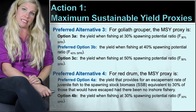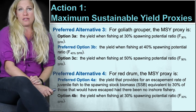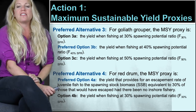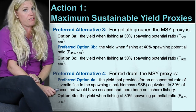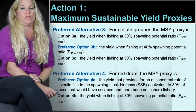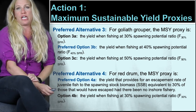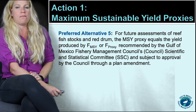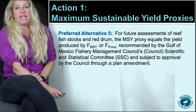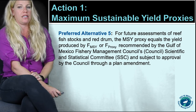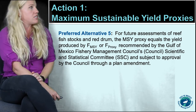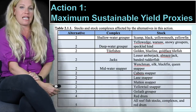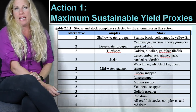The council also selected alternative four as one of its preferreds, which would set an MSY proxy for red drum specifically. Sub-option A would use the yield that provides for an escapement rate of juvenile fish to the spawning stock biomass equivalent to 30% of those that would have escaped had there been no inshore fishery. Option B would set the red drum MSY proxy at the yield when fishing at 30% spawning potential ratio. Alternative five, also a council preferred, would set the MSY proxy equal to the yield produced by fishing mortality at MSY or proxy as recommended by the Gulf of Mexico Fishery Management Council's Scientific and Statistical Committee, subject to approval by the council through a plan amendment. This table summarizes the different alternatives and the stocks they impact.